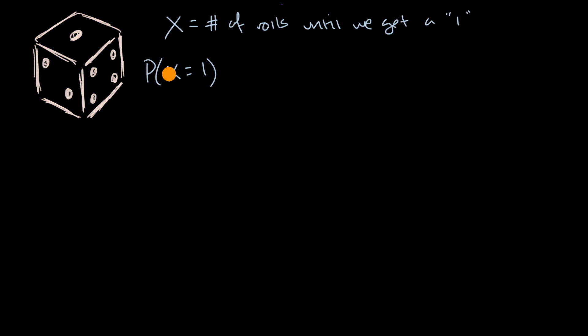The probability that X is equal to one means it only takes us one roll to get a one. That's going to be a one-sixth probability.